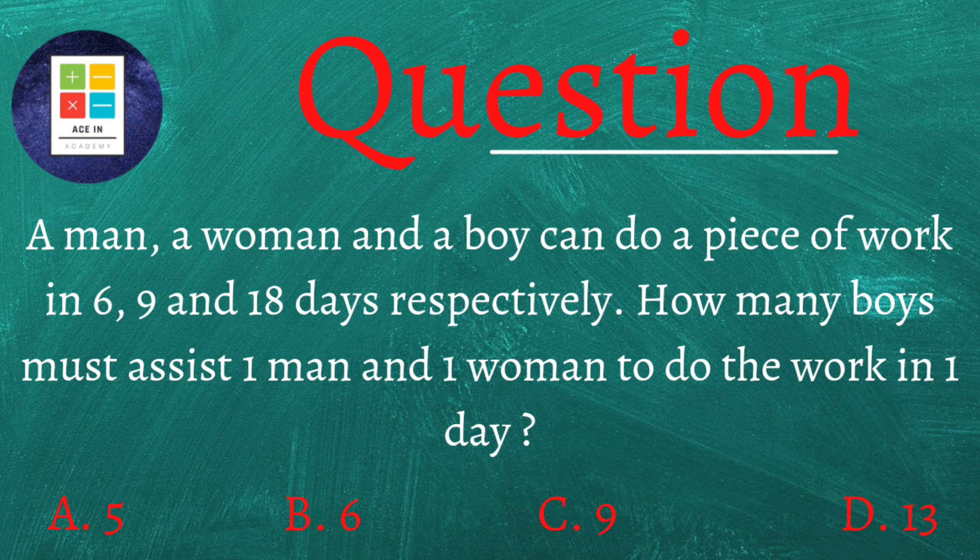The question is as follows: A man, a woman, and a boy can do a piece of work in 6, 9, and 18 days respectively. How many boys must assist one man and one woman to do the work in one day? We are provided four options: Option A is 5, Option B is 6, Option C is 9, and Option D is 13.